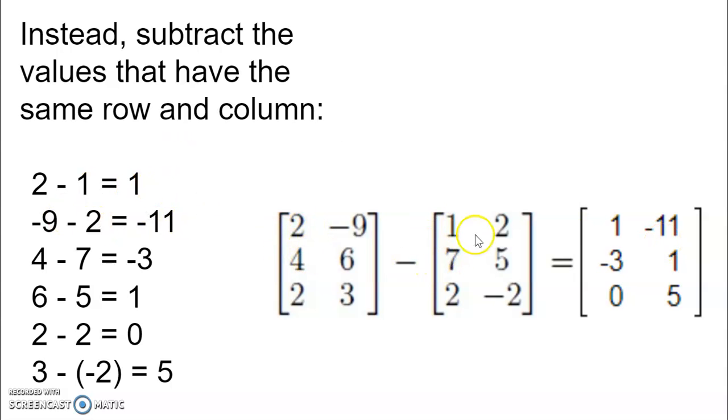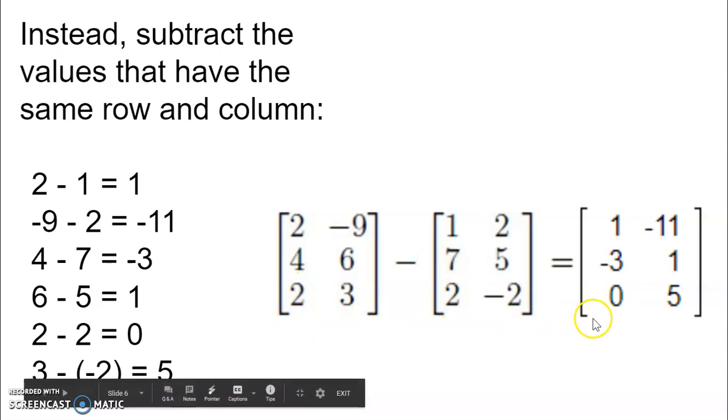Four minus seven, that would give us negative three, shown here. Six minus five gives us one. And then here, we have two minus two, which gives us zero.